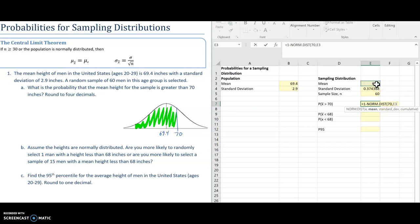So norm.dist, and my x value is 70, mean is 69.4, standard deviation 0.374 about, and 1 for true, the cumulative function. And there is the probability that x bar is greater than 70.